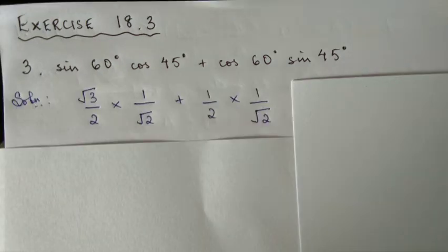Now we substitute the values from the table. sin 60° times cos 45° - we multiply these values together, plus cos 60° times sin 45° - multiply these values as well.